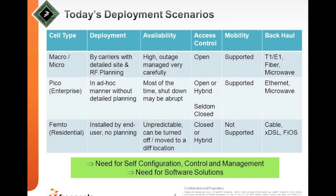Looking at today's deployment scenarios: for macro or micro cells, deployment is primarily done by carriers, requires detailed site planning, availability is very high, outages are managed carefully, access control is open — meaning you can move from one base station to another freely — mobility is supported with seamless call handling, and backhaul is typically T1/E1, fiber, or microwave.